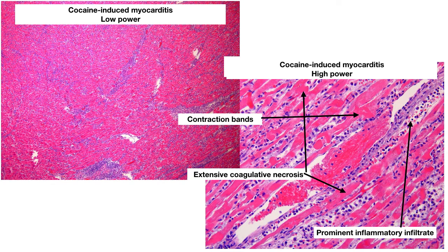Since cocaine was mentioned in the previous section, this slide shows an individual with cocaine-induced myocarditis. On low power, you can see the extensive infiltrate throughout — blue dots representing lymphocytes and inflammatory cells. Under higher power, you can see extensive coagulative necrosis; most cardiac myocytes in that image are dead or dying, appearing hyper-eosinophilic with pale or absent nuclei and a prominent inflammatory infiltrate. At the arrow, contraction bands are visible.